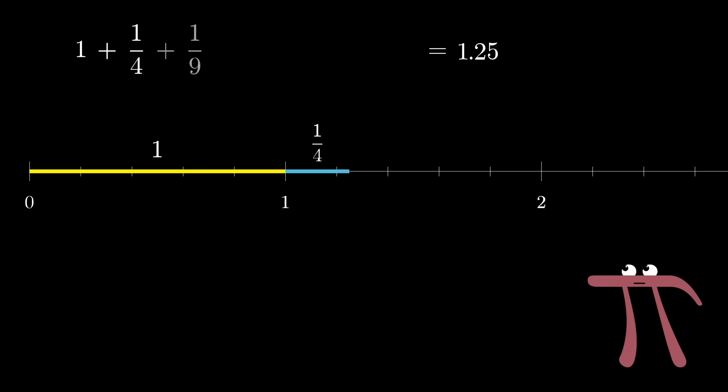Take 1 plus 1/4 plus 1/9 plus 1/16 and so on, where you're adding the inverses of the next square number. What does this sum approach as you keep adding on more and more terms?